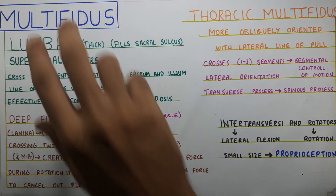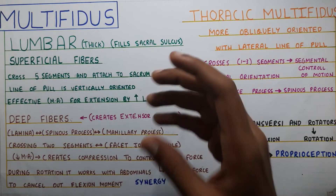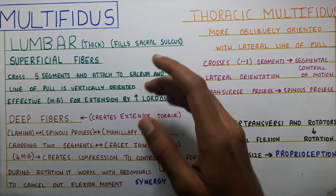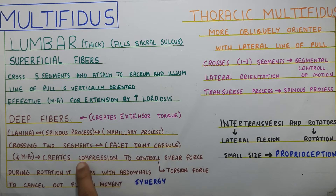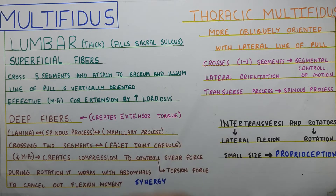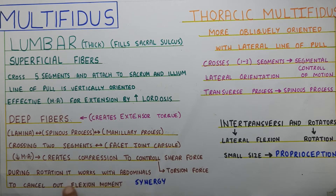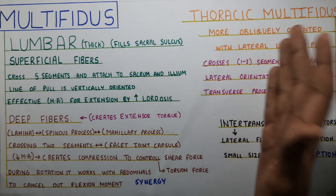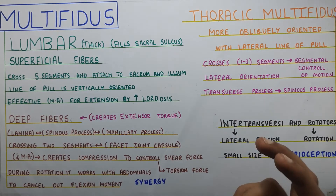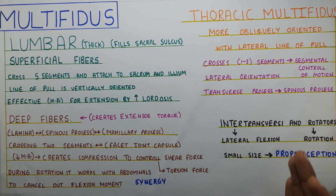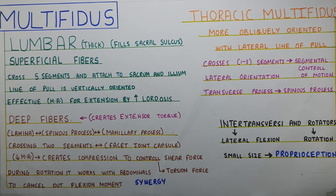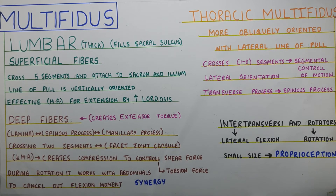Moving on, the superficial multifidus mostly creates lordosis, whereas the deep creates compression which controls shear in the lumbar spine. During rotation it works with the abdominals. The rotators and intertransverse muscles have a proprioceptive function. With that, we finish off this topic.